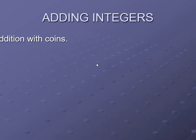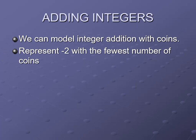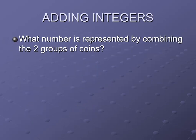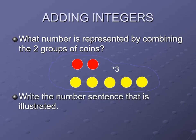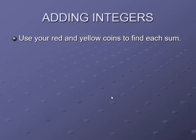Now let us do addition of integers with this activity. Represent minus 2 with the fewest number of coins, then represent plus 5 with the fewest number of coins. When you combine the two groups, two pairs cancel out and you are left with plus 3 — three positive coins. The number sentence illustrated is minus 2 plus plus 5 equals plus 3.